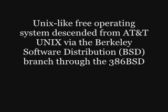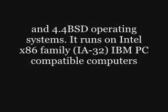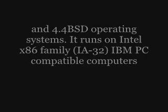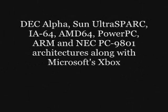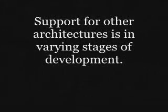FreeBSD is a Unix-like free operating system descended from AT&T Unix via the Berkeley Software Distribution (BSD), branched through the 386BSD and 4.4BSD operating systems. It runs on Intel x86 family (IA-32), IBM PC compatible computers, DEC Alpha, Sun UltraSPARC, IA-64, AMD64, PowerPC, ARM, and NEC PC-9801 architectures, along with Microsoft Xbox. Support for other architectures is in varying stages of development.